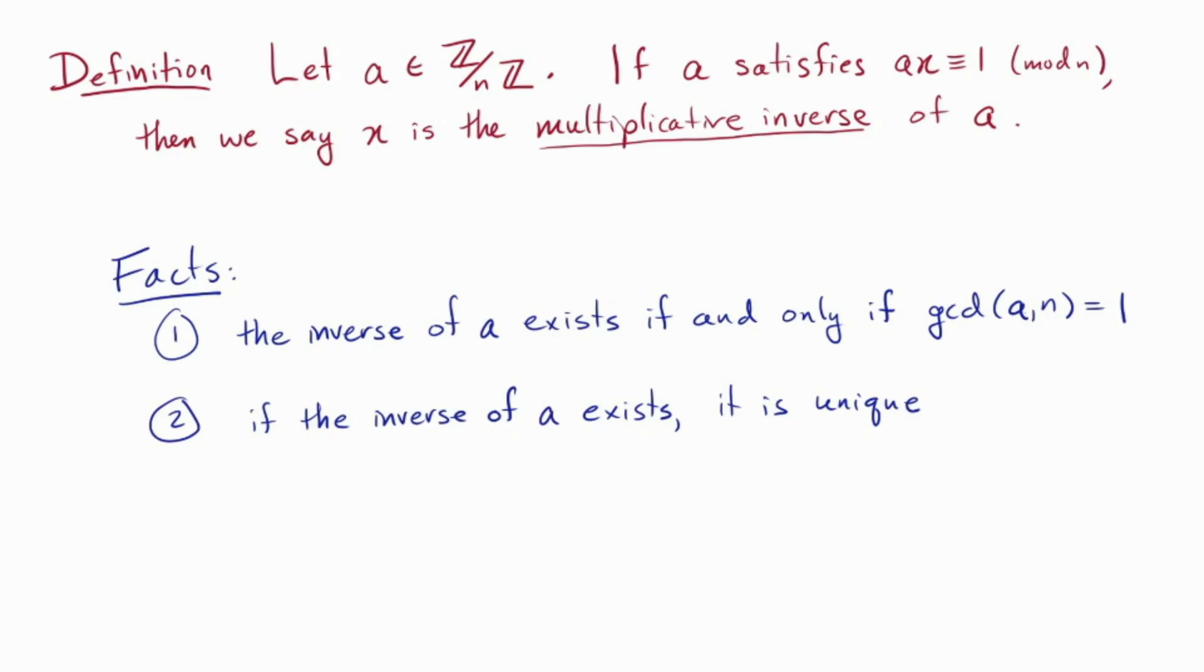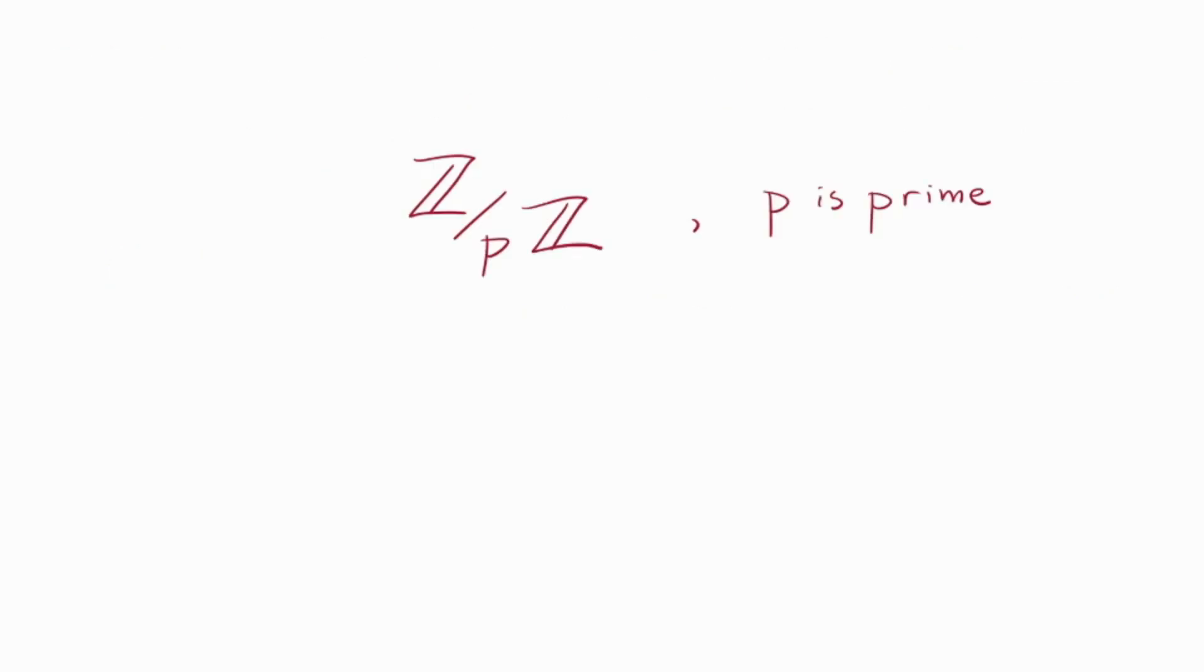It turns out that finding the multiplicative inverse is a very useful task you'll need to do in all kinds of circumstances. In particular, it'll let you solve linear equations mod n. Okay, so consider a prime modulus p.